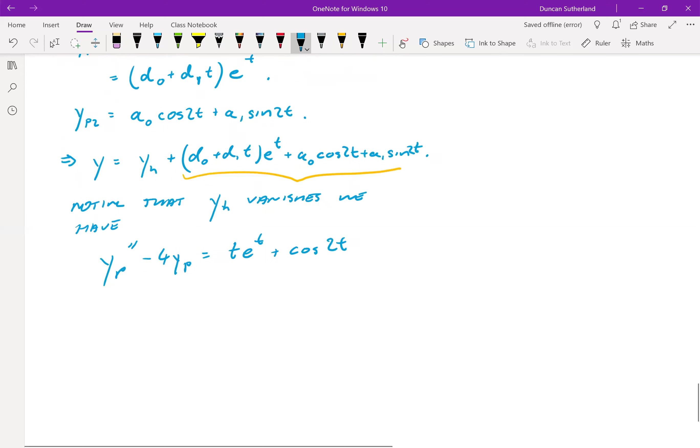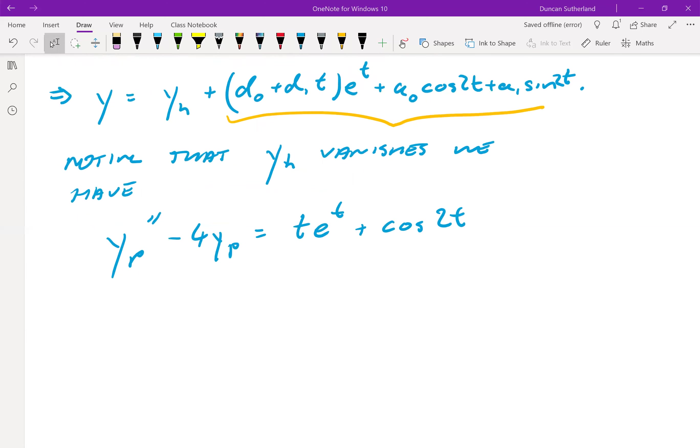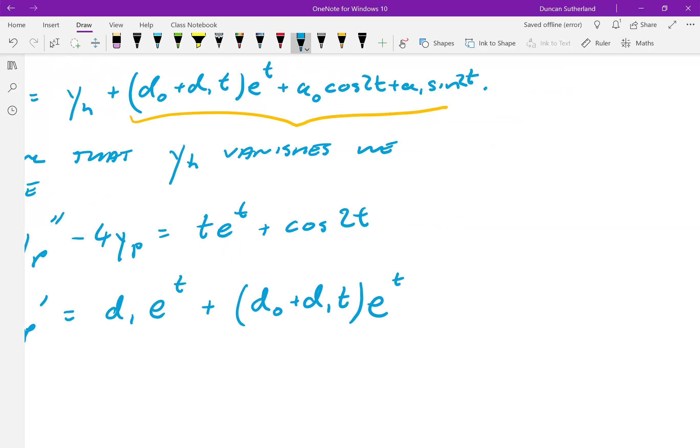All right. So I'm going to need y particular double prime. So I'm going to need to differentiate all of this, which means using the product rule. So differentiate this bit. Leave the second bit alone. y_p prime equals d1 e to the t. Plus leave this bit alone. Differentiate the second bit, which is the same thing. Right. It's just the same as the original function because we've got an exponential. So that's nice. Now we've got to deal with the sinusoidal bits. So we're going to get a minus 2a0 sine plus 2a1 cos. Right.